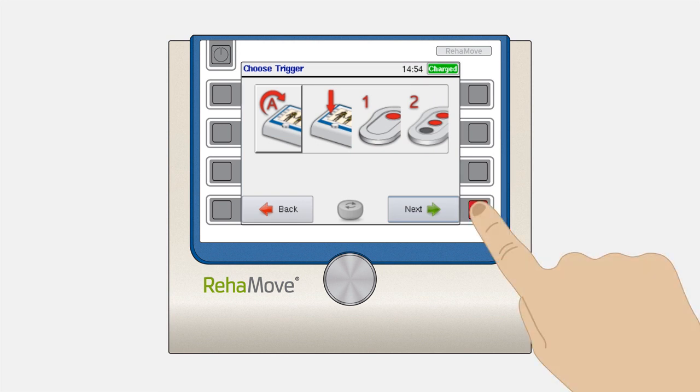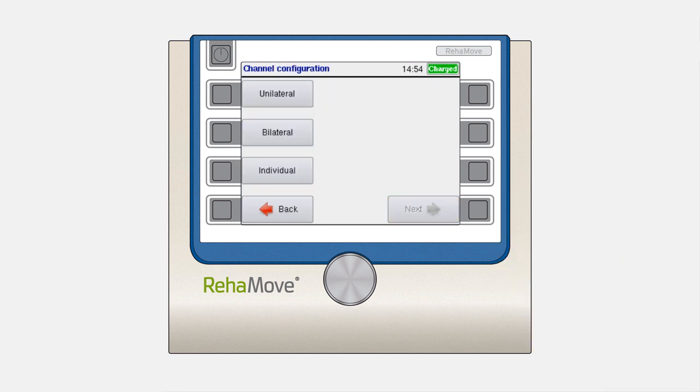Now press the next button to go to the channel configuration. Here you can choose between three options, namely unilateral, bilateral or individual.